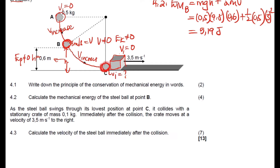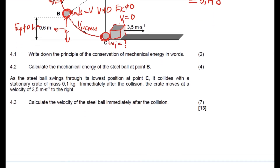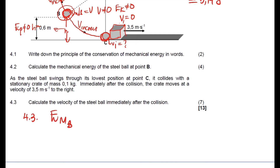To calculate the velocity of the steel ball immediately after the collision, we first need the velocity of the ball just before it hits the crate — the velocity before collision. We will use conservation of mechanical energy, saying mechanical energy at B equals mechanical energy at C, evaluated just before the collision.